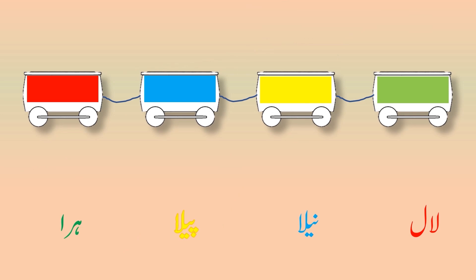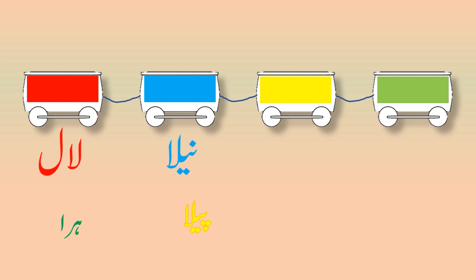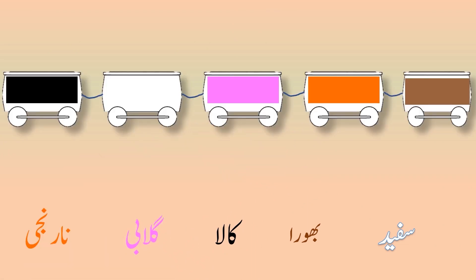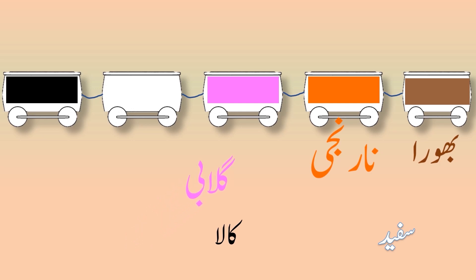Bhoora. Rangon, Rangon. नारंजी, गुलाबी, सफेद, काला.